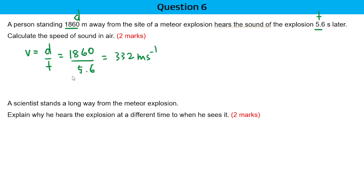You get 1 mark for writing down the formula, and 1 mark for doing the correct calculation. A scientist is standing a long way from the meteor explosion — explain why he hears the explosion at a different time from when he sees it.